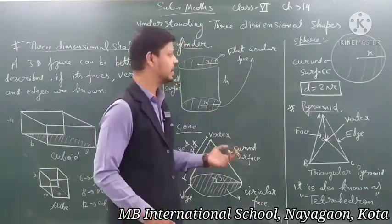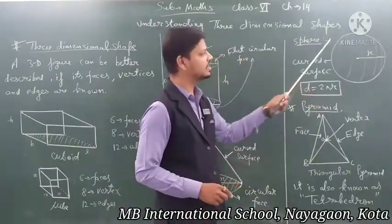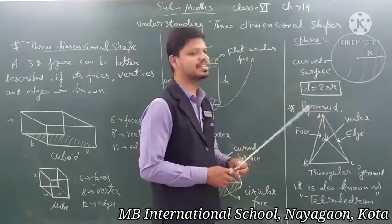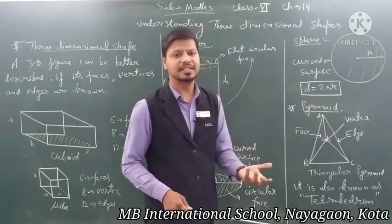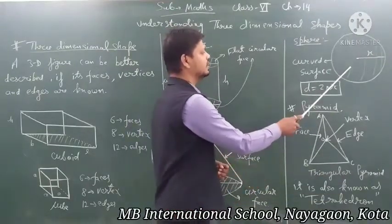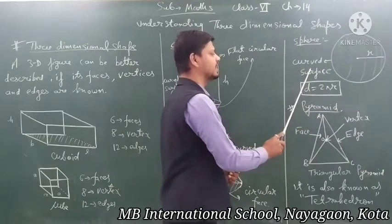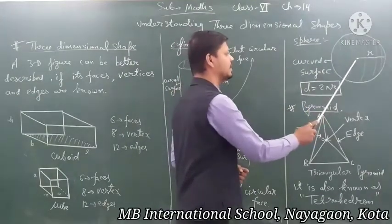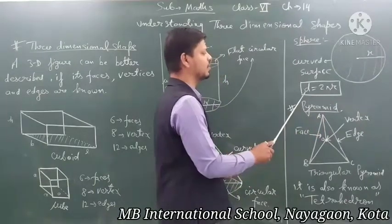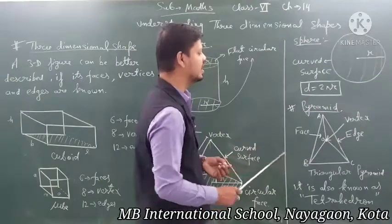After that, a sphere. A sphere is a round shape 3D figure. Examples of a sphere are a football, an orange, and a basketball. In the case of a sphere, the total surface is entirely a curved surface. The diameter of a sphere is equal to 2 multiplied by r (the radius).